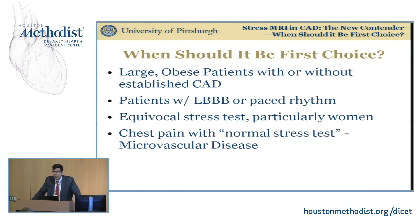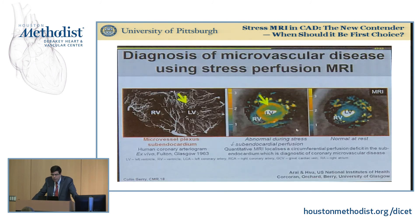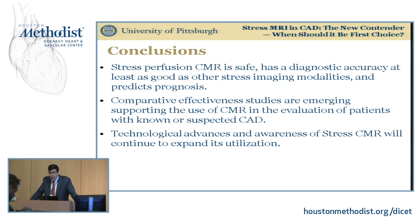To conclude, when should we consider stress CMR as the first choice? Particularly in large obese patients, whether or not there is established coronary disease, due to potential attenuation artifacts and the excellent spatial resolution of CMR. Also in patients with left bundle branch block or paced rhythm, as mentioned in the appropriateness criteria. Equivocal stress tests, particularly in women. And in phenomena of chest pain with normal stress test where microvascular disease is suspected — work being done by Dr. Cullenberry in Glasgow using parametric maps to understand whether the dark rim artifact might be a surrogate for microvascular disease. Stress CMR is safe, has good diagnostic accuracy comparable to other stress modalities, and technological advances will continue to expand its utilization.